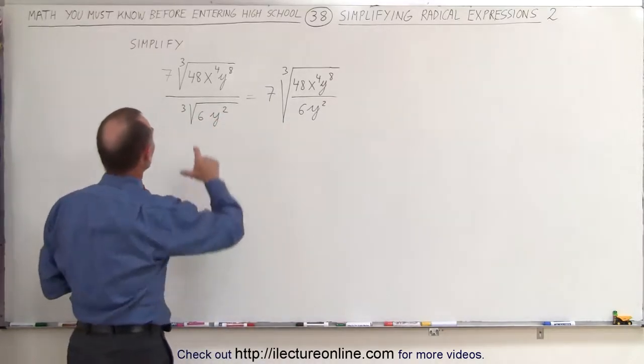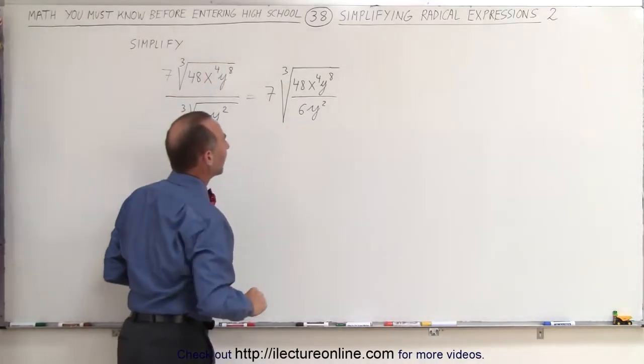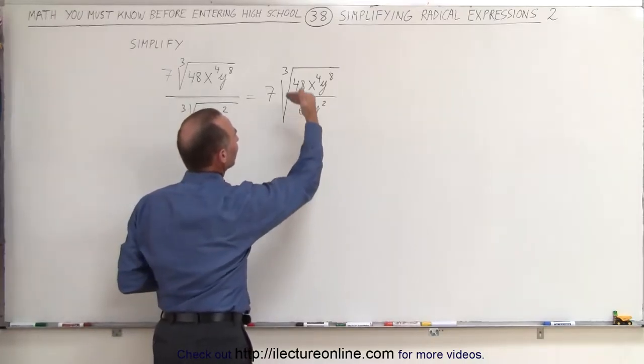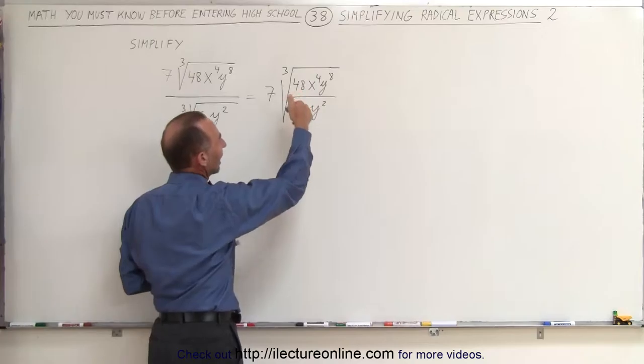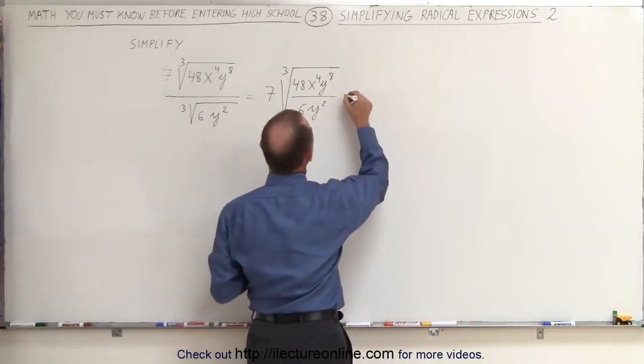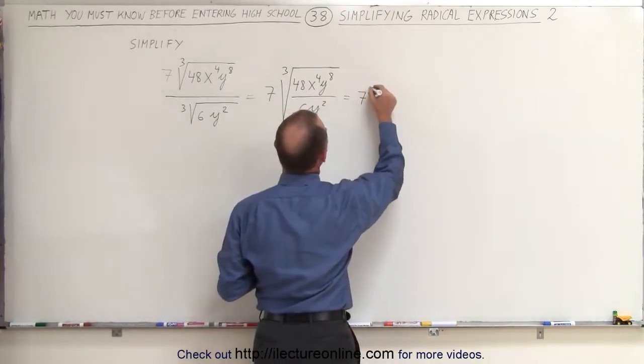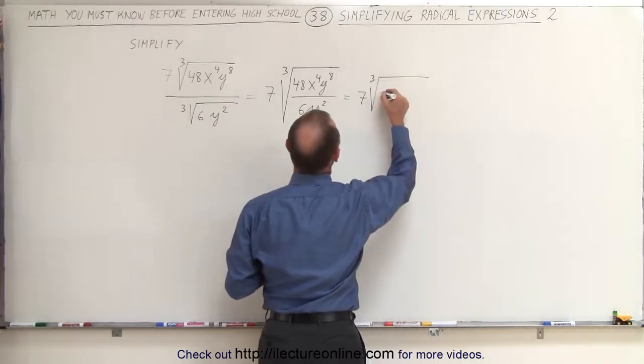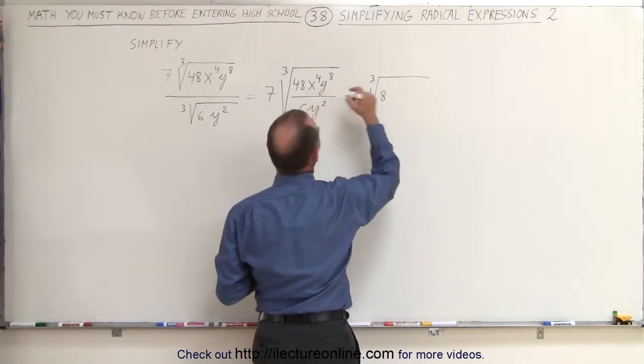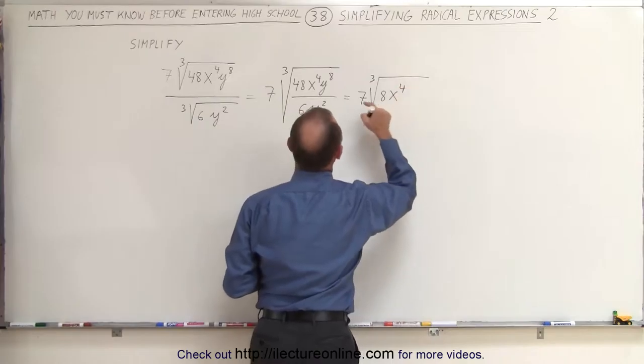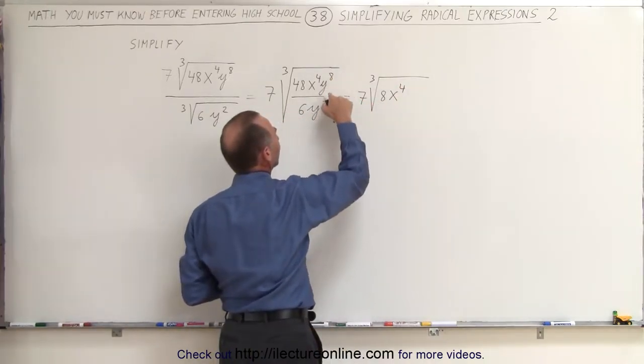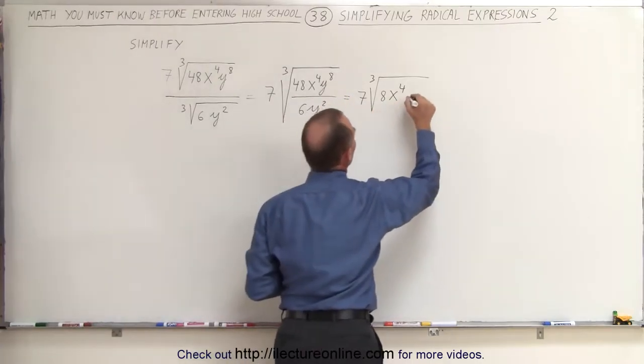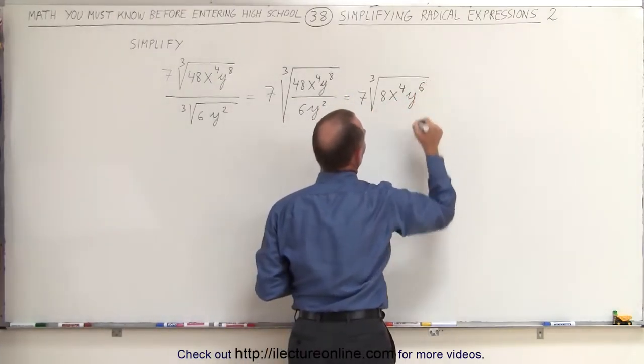We can do that because the root is the same. Next, we can divide the denominator into the numerator. We see that 6 goes into 48 8 times. So this can be written as 7 times the cube root of 8x⁴, and we have y⁸ divided by y², so we subtract exponents. 8 minus 2 is 6, so this becomes y⁶.